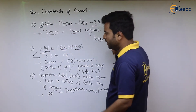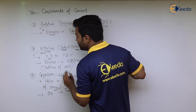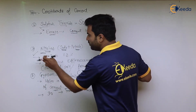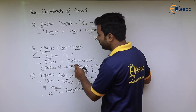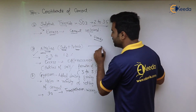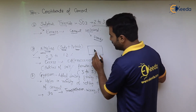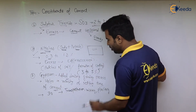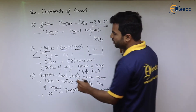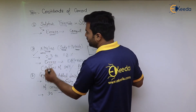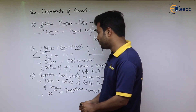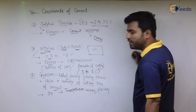The next constituents are alkalis, which are soda (Na₂O) and potash (K₂O), added in the percentage of 0.3 to 1.2 percent. If alkalis are in excess, they form efflorescence — the white patches or salt coatings you may have seen on the surface of cement structures. Excess alkalis should therefore be avoided.